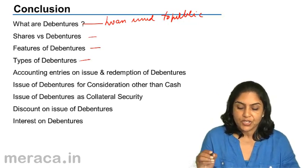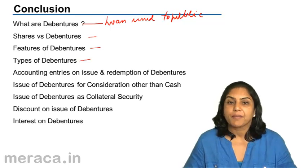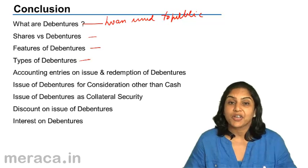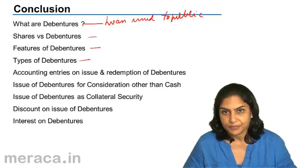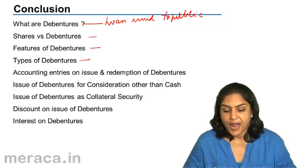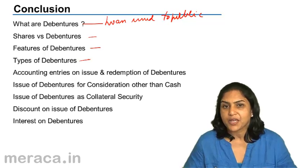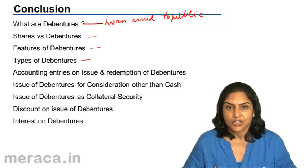We then discussed the types of debentures. We may have redeemable or irredeemable debentures, registered or bearer debentures depending on transferability, convertible and non-convertible debentures — convertible to shares or not — and secured and unsecured debentures. The security may be a specific charge or a floating charge, which is a general charge on all the assets of the company.